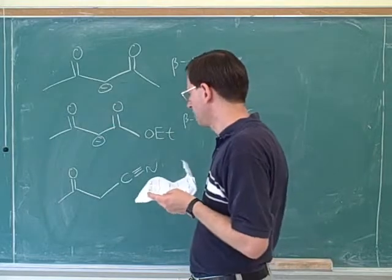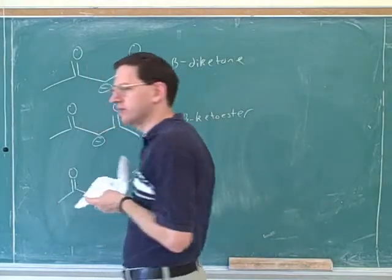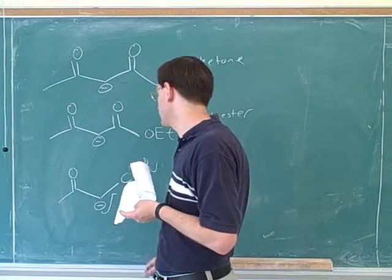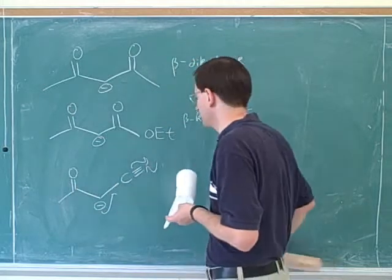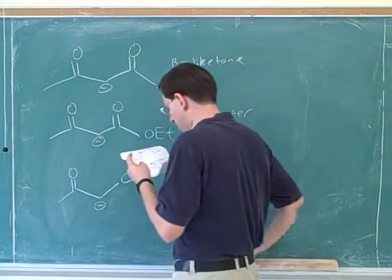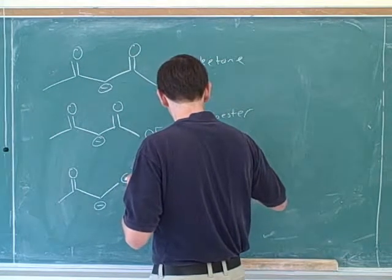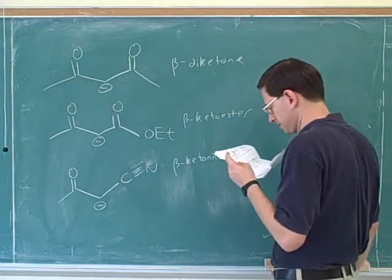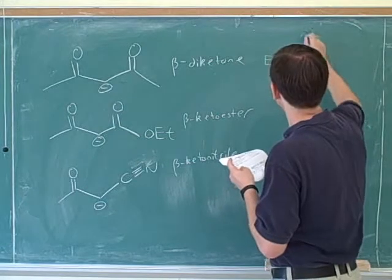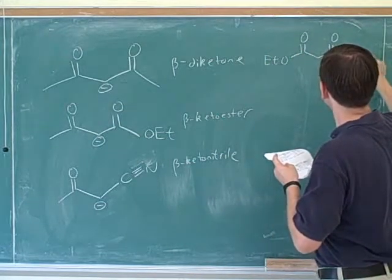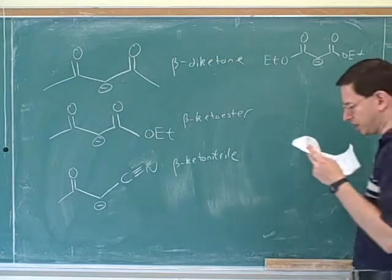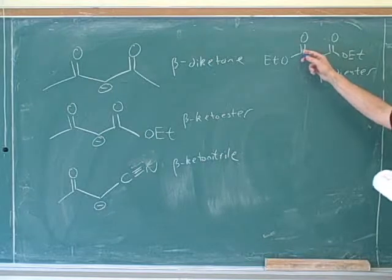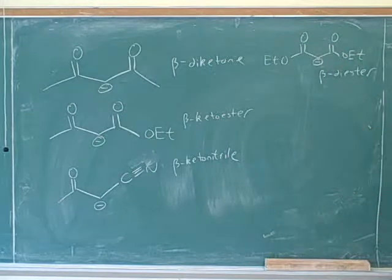We can deprotonate this alpha carbon, and there are two different resonance structures — you can kick the negative charge onto a nitrogen instead of an oxygen. There's a resonance structure where the negative charge is on the nitrogen, and one where it's on the oxygen, so this is also a good stabilized enolate. We could call this a beta-ketonitrile, and it would also be a good Michael donor. Similarly, a beta-diester has two ester groups where one is beta to the other; it's stabilized by two different resonance structures, making it a good Michael donor as well.